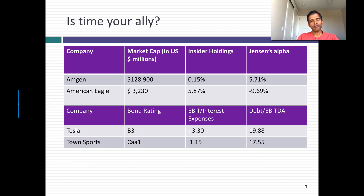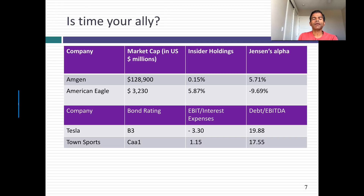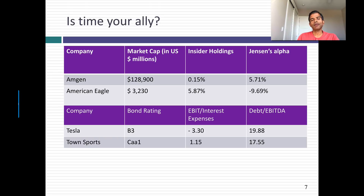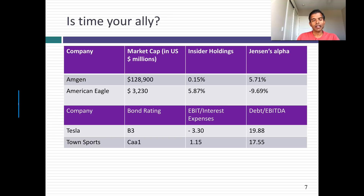Let's look at my companies to see where time is my ally. For my under-levered companies, I looked at market cap, insider holdings, and how well or badly the stock has done using Jensen's alpha — which measures how well or badly your stock did after adjusting for the market and for risk. A positive number means your stock did better than expected; a negative number means worse than expected. With Amgen: a big market cap of $129 billion, almost no insider holding, and a Jensen's alpha of positive 5.71 percent annualized — it delivered more than expected. With American Eagle: a much smaller market cap of $3.2 billion, insider holdings of about 6 percent, and a Jensen's alpha of about negative 9.69 percent — the stock hasn't done well in the period leading up to the decision point.